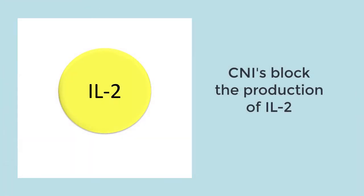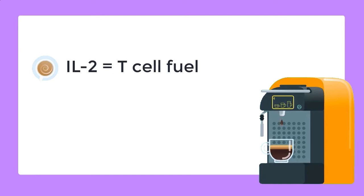In a nutshell, calcineurin inhibitors block the production of interleukin-2. Remember interleukin-2 from episode 2? This is T-cell activation fuel.